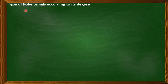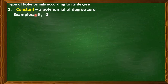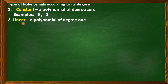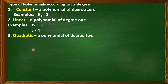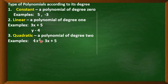Another type of polynomial is classified according to its degree. First, a constant polynomial has a degree of 0, for example 5 or negative 3. Next, a linear polynomial has a degree of 1, for example 3x plus 5 or y minus 4. Third, a quadratic polynomial has a degree of 2, for example 4x² minus 3x plus 5 or x² minus 4.